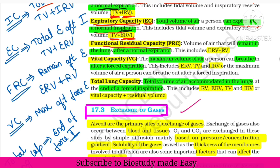Next, functional residual capacity — this is the air remaining in the lungs after normal expiration. It is calculated as ERV plus RV — expiratory reserve volume plus residual volume.